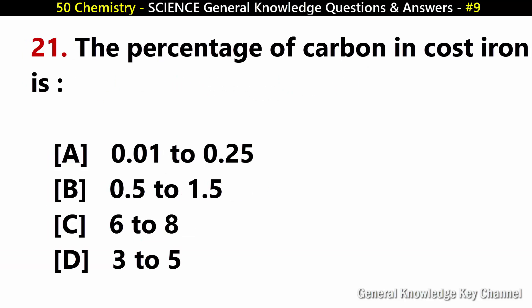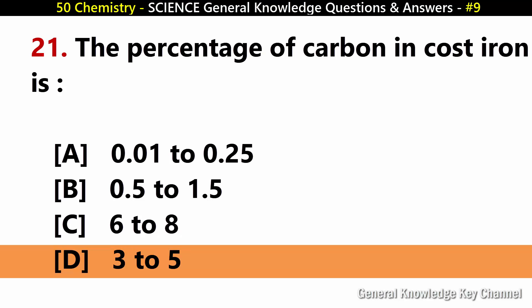The percentage of carbon in coarse iron is? Answer D: 3 to 5.